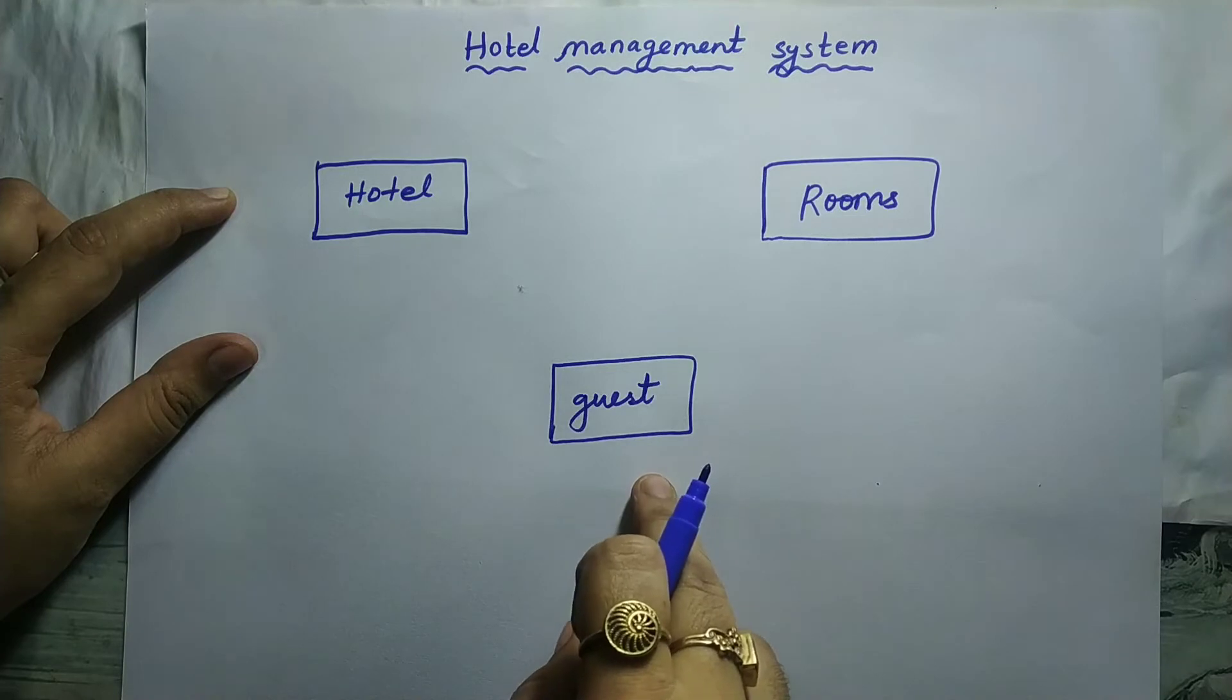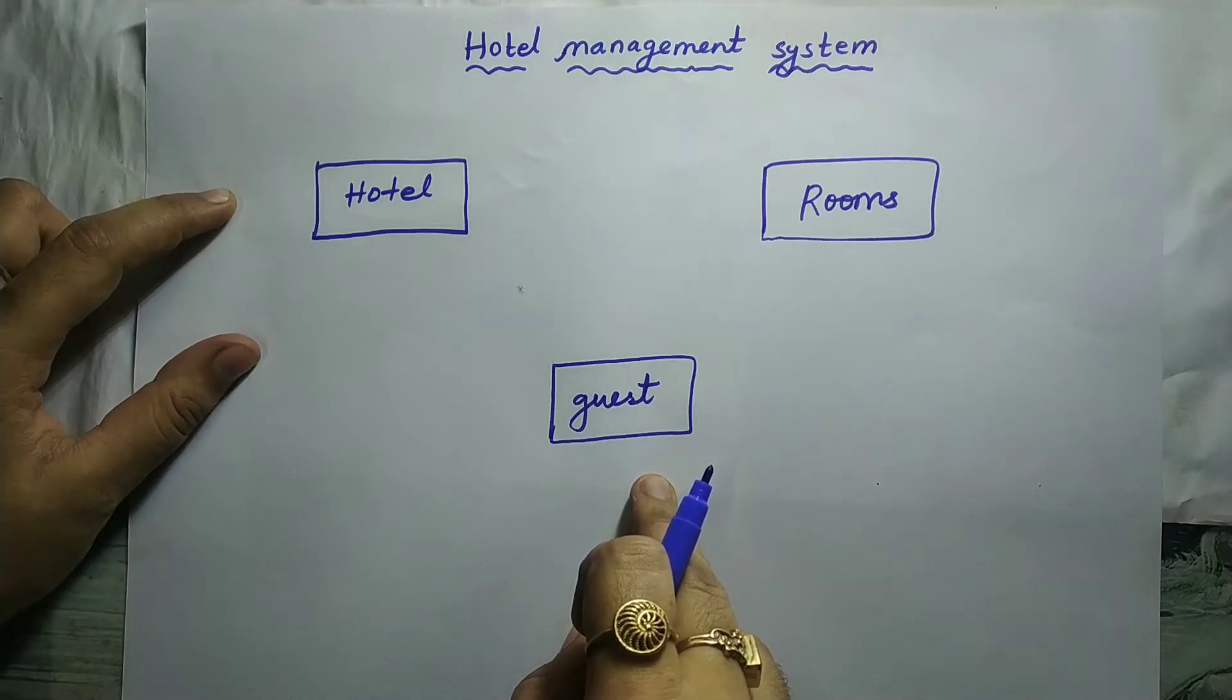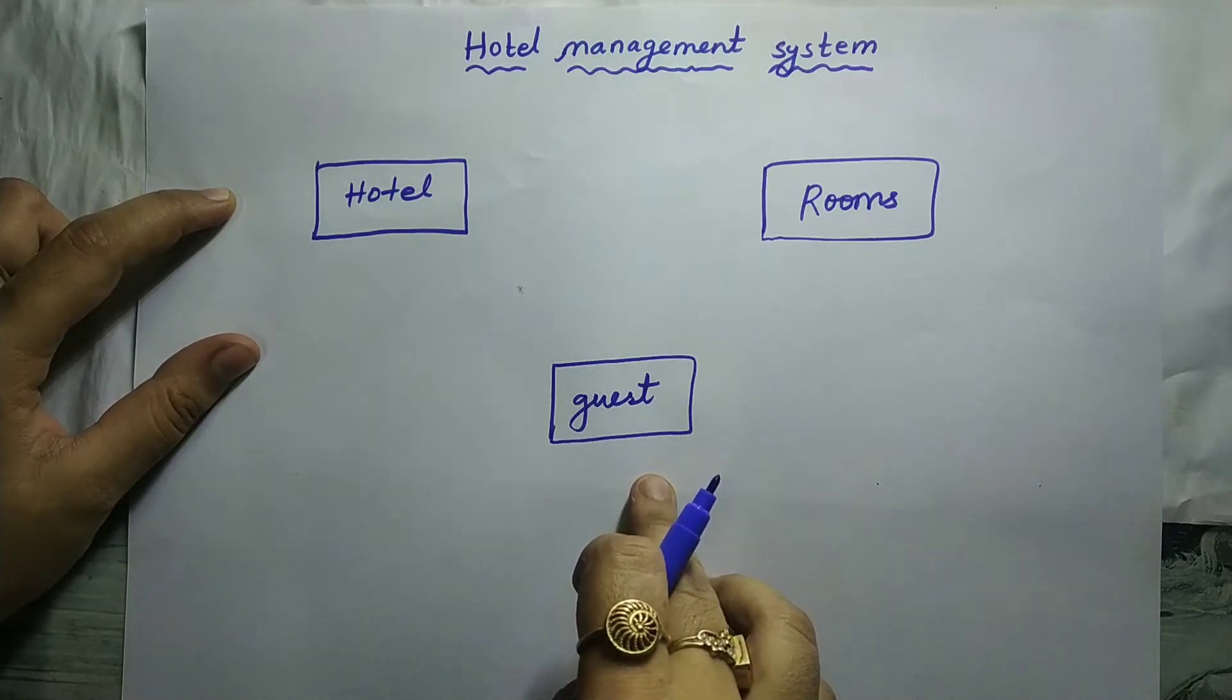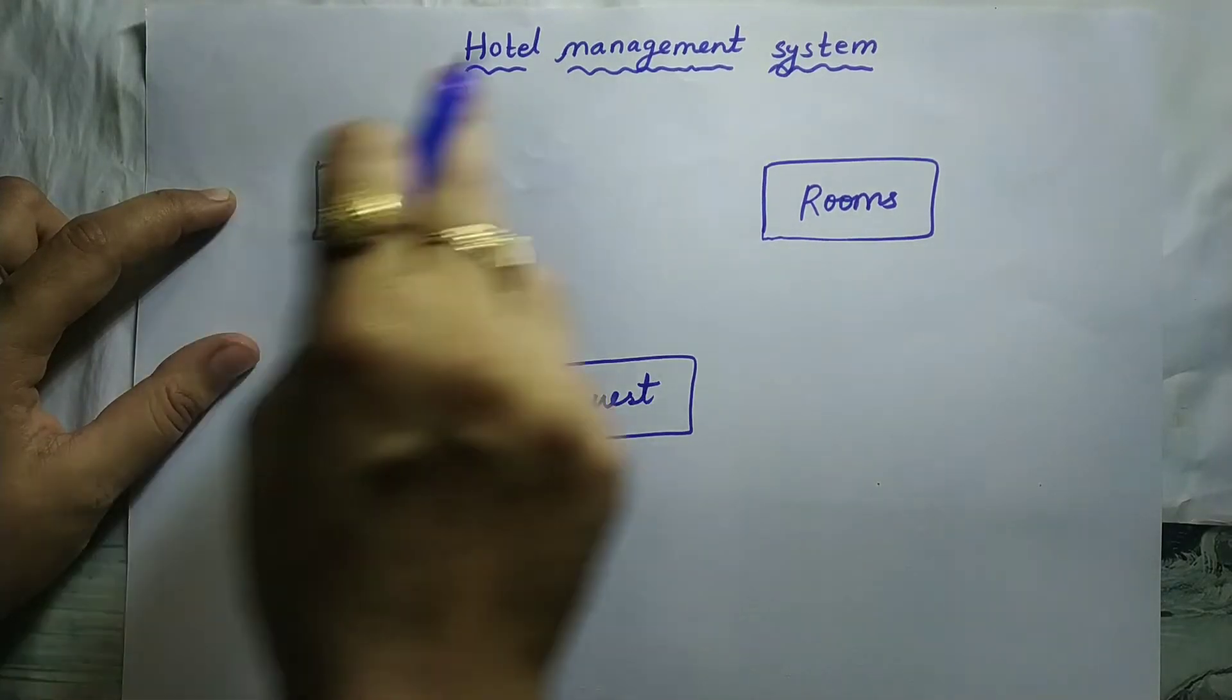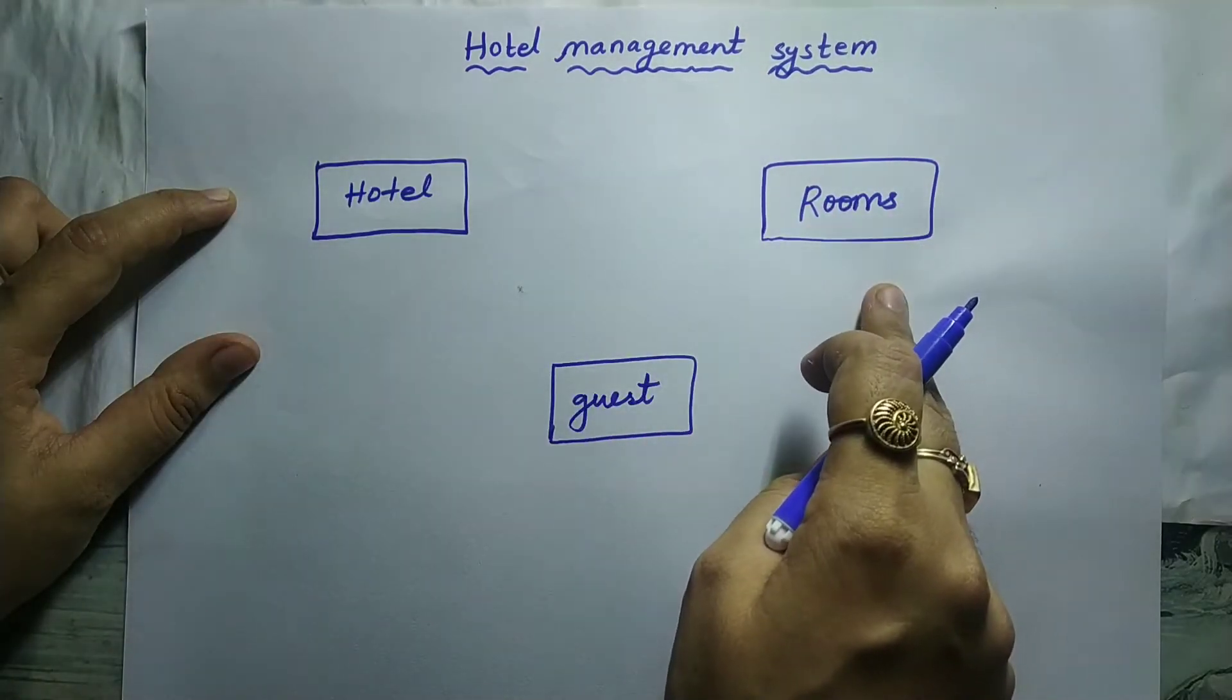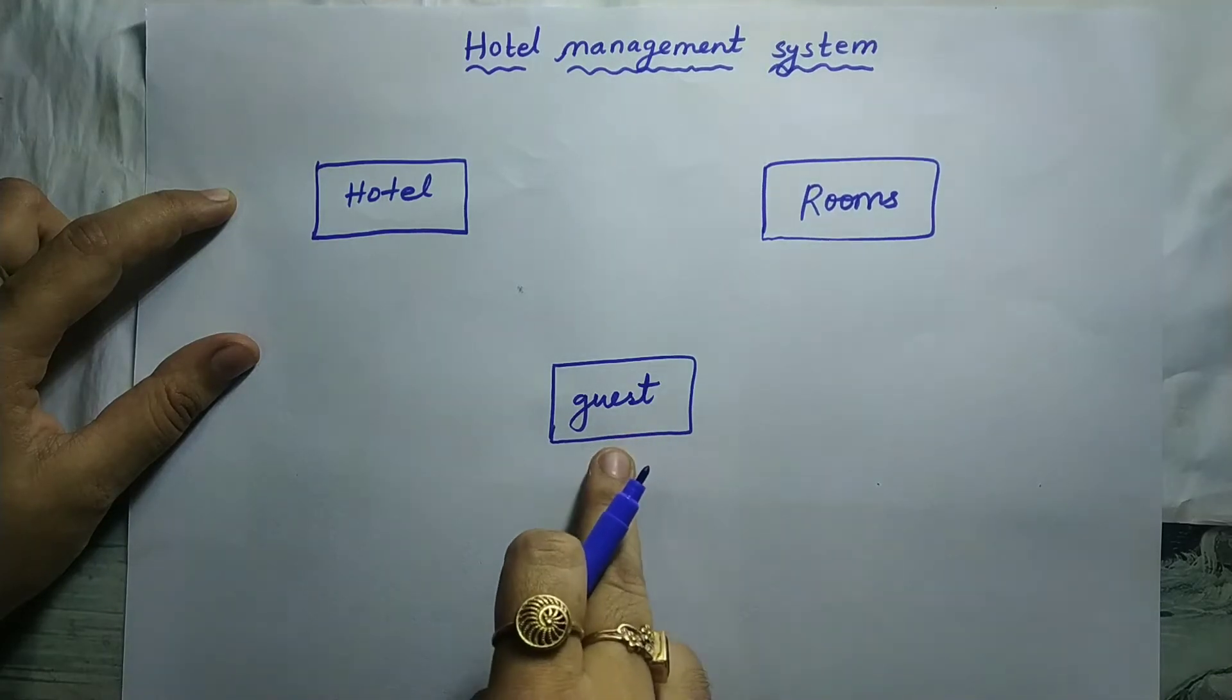The next word that comes into our mind is attributes. Attribute is the characteristics of entity. Characteristics of hotel is attribute, characteristics of room is attribute, characteristics of guest is attribute.